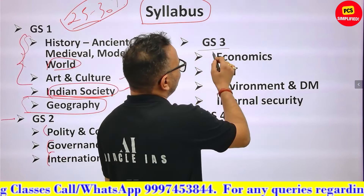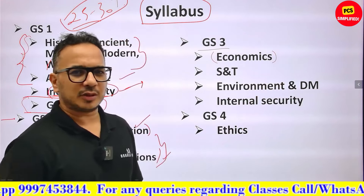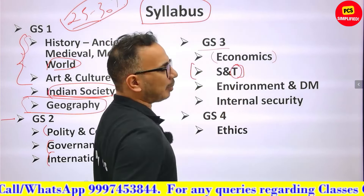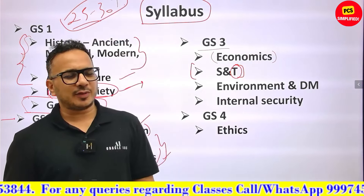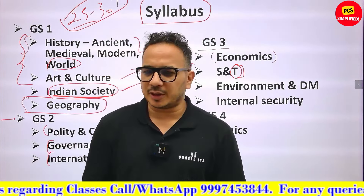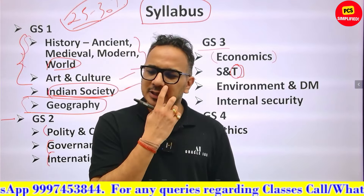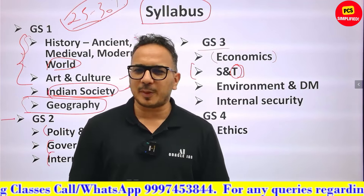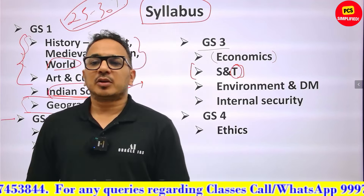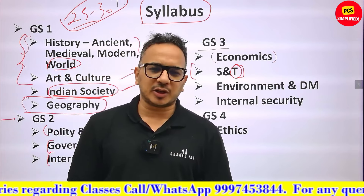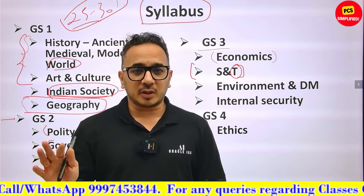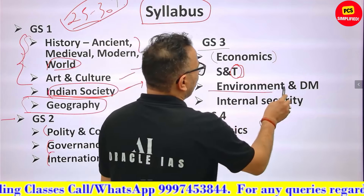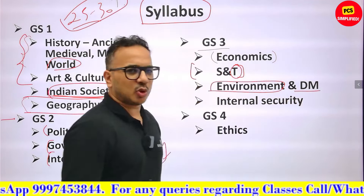GS3 includes Indian Economy (complete), and the new addition is Science and Technology — where focus is more on the tech part. At UPSC level it's very dynamic and questions can be difficult, but at PCS level you can expect standard topics: biotechnology, nanotechnology, and running themes like artificial intelligence or cryptocurrency. Environment is an older topic, but disaster management is something new — only in mains.